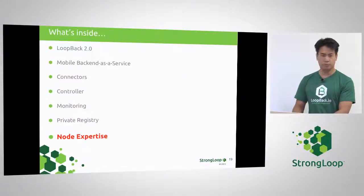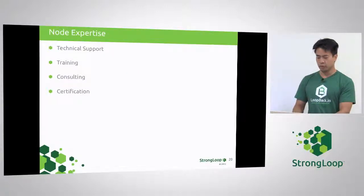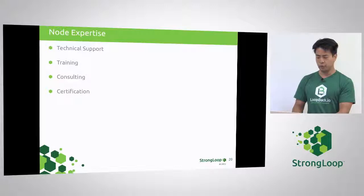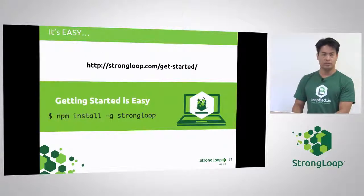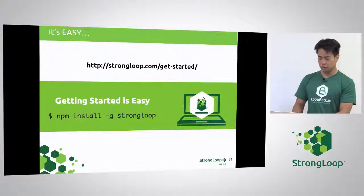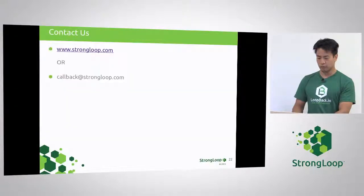Last but not least, Node expertise. We've been out in the field quite a bit and learned a lot about Node and real-life use cases. We're able to provide technical support, training, certification, consulting, reviewing best practices and your architecture. We're out there to support our products as a commercial offering. It's easy — go to StrongLoop.com and get started. Install Strongloop API server by running npm install -g Strongloop. If you'd like to learn more, contact us at callback@strongloop.com or visit our website. Thanks for your time.